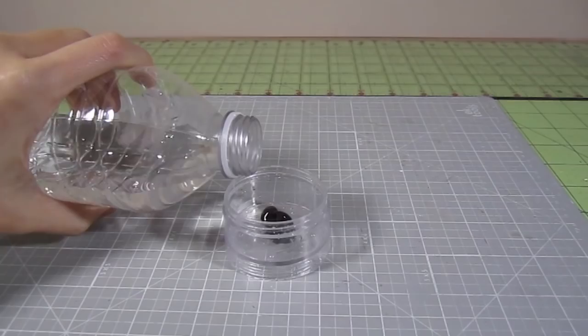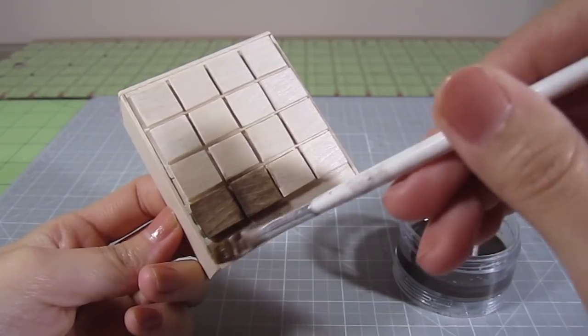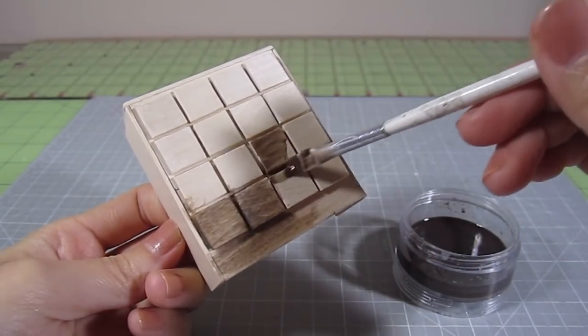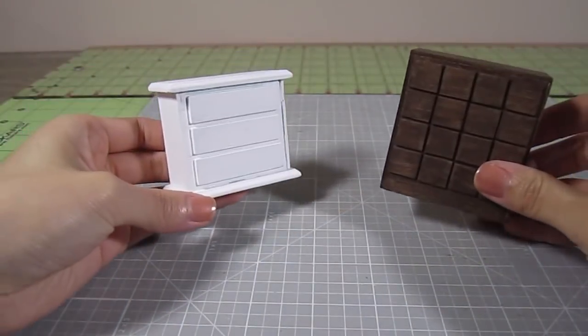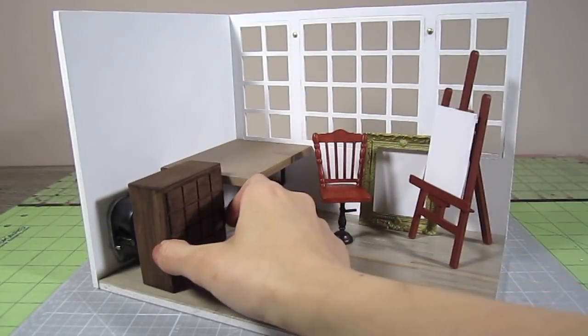For a stain, I mix dark brown acrylic paint and water. Just like for the floor, I apply thin coats until I reach the desired color. Again, you can choose to use the cabinet that came with the kit because it's still very pretty. But I think the vintage one matches the style I'm going for.